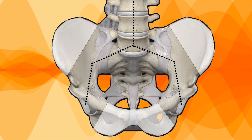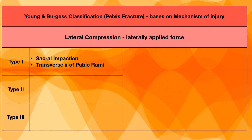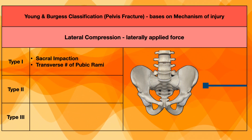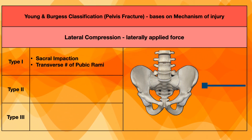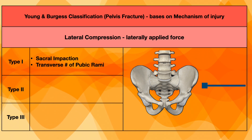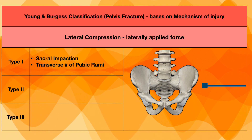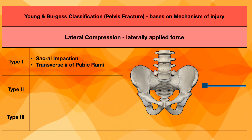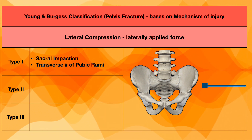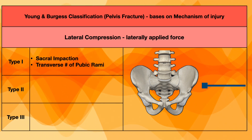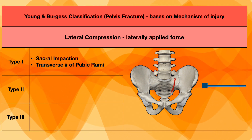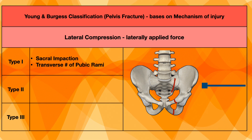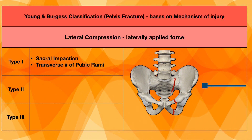Let's now understand the Young and Burgess classification. The first type is lateral compression. If there is a force from the lateral side, on the same side there will be an internal rotation force, whereas on the other side there will be an external rotation force. In type 1, with an internal rotation force on the same side, the first thing that can happen is a sacral impaction — a minor fracture or impaction at the sacral ala — and there is also a possibility of fracture of the pubic rami. This is a type 1 fracture.